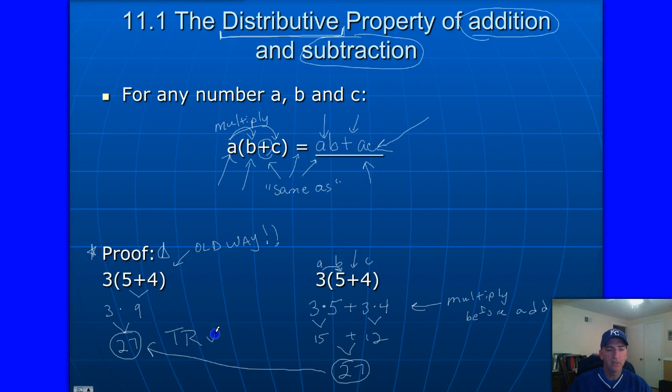So what we're trying to show you here is that this is true. Either way, you work that out, whether you do the addition in the parentheses, then multiply, or you distribute the 3, you still get 27. That will always work, and that's important to us. And we'll learn why as we get into the next video there.